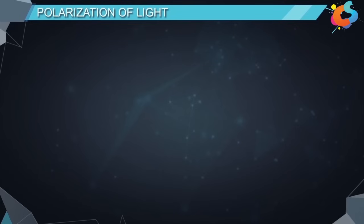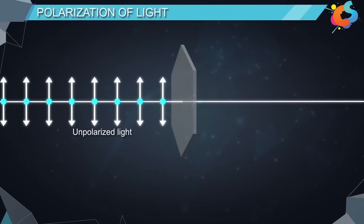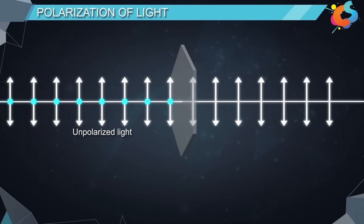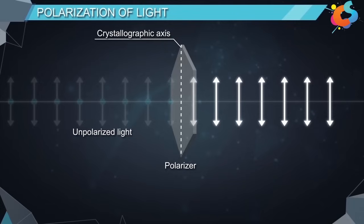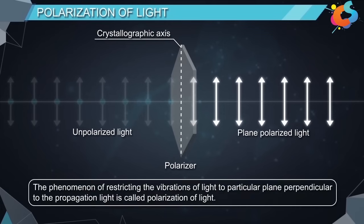Polarization of light. When an unpolarized light is allowed to pass through a polaroid — let's call it a polarizer — out of all the vibrations of light, only those vibrations pass through the crystal which are parallel to the crystallographic axis, represented here by the dotted line. The emerging light is plane polarized light, containing vibrations in only one plane. The phenomenon of restricting the vibrations of light to a particular plane perpendicular to the propagation of light is called polarization of light.